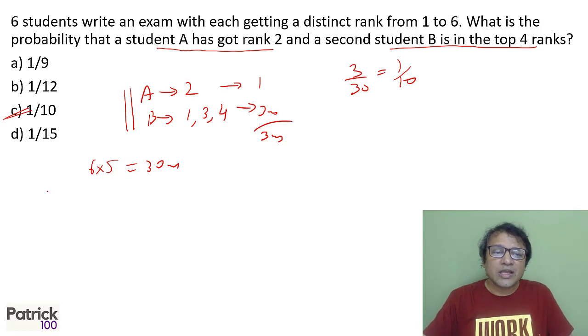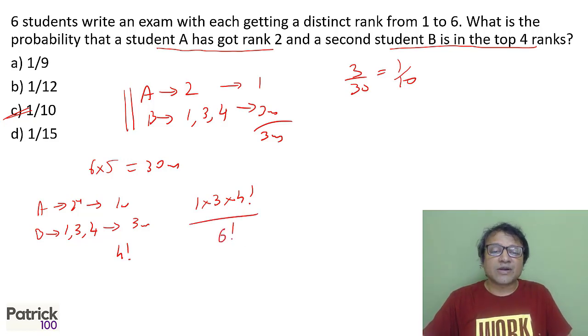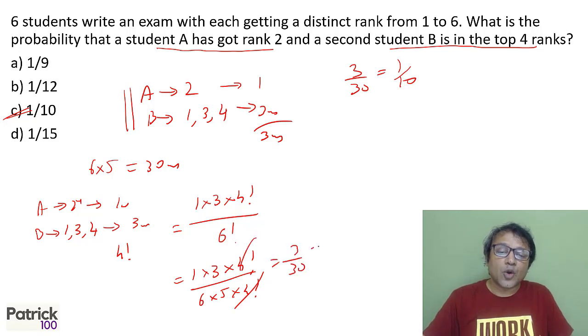Another way: if A gets second rank, one way, and B gets first, third, or fourth rank, 3 ways, and the remaining 4 can be arranged in 4 factorial ways, total favorable outcomes is 1 times 3 times 4 factorial. Total arrangements for all 6 is 6 factorial. This gives 3 times 4 factorial upon 6 factorial, which equals 3 upon 30 or 1 out of 10. Thank you.